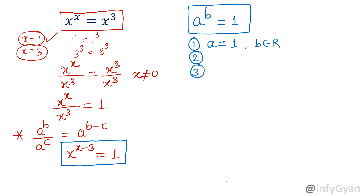Second case: if the exponent b is equal to 0, the result is 1, provided a cannot equal 0 — because 0 raised to the power 0 is an indeterminate state and you cannot find its value.